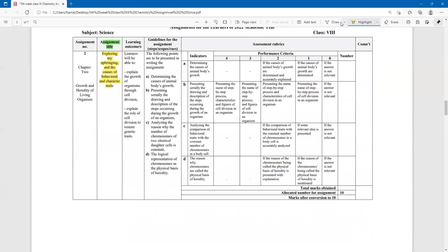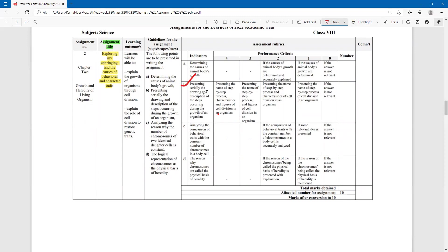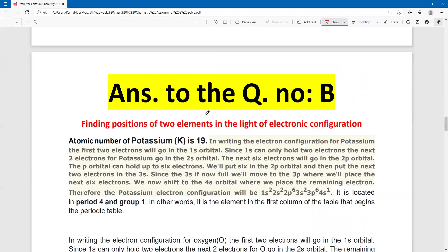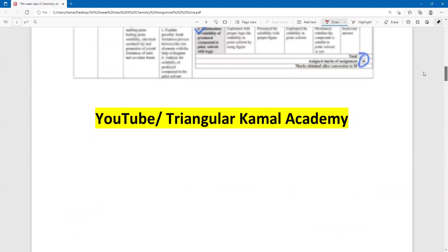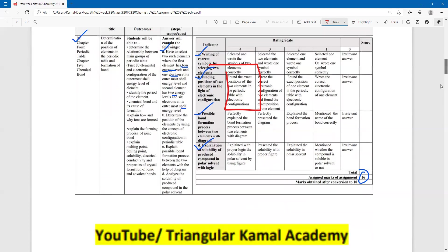Read the second question. Here the second question is, find the position of two elements in the light of electron configurations. That means, in the electron configuration, we can put the potassium in oxygen position.